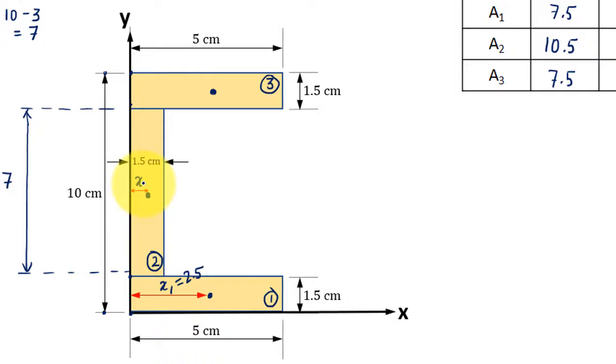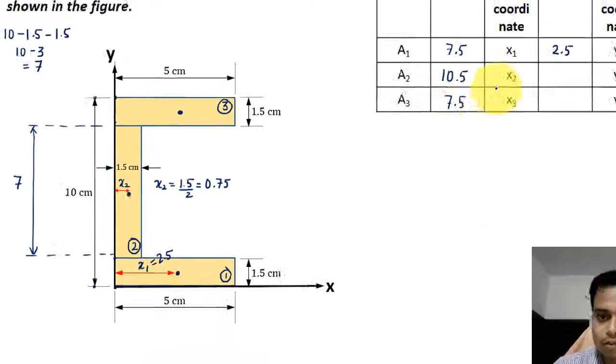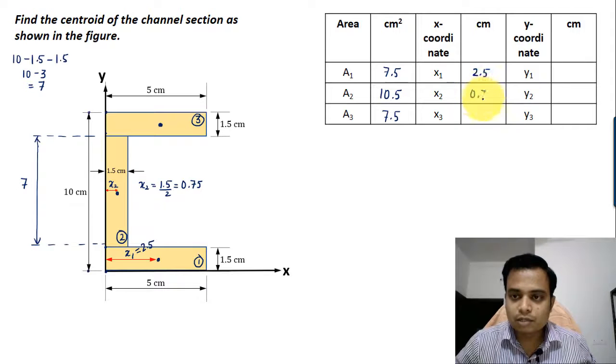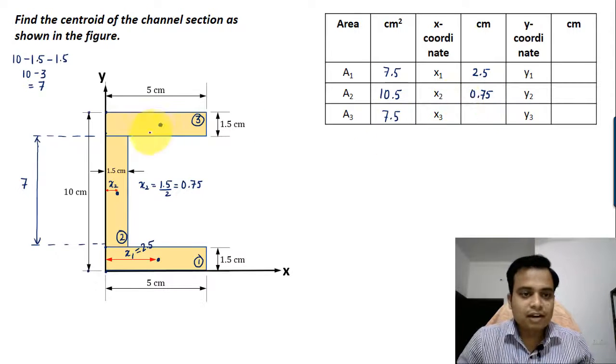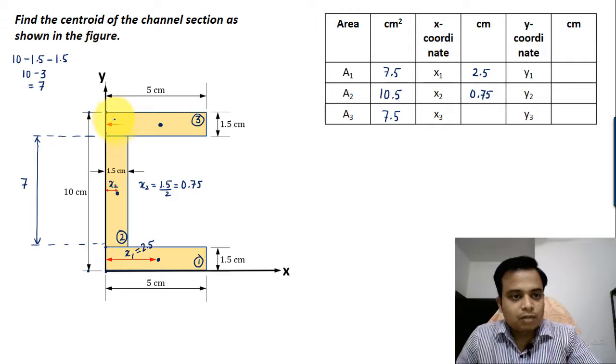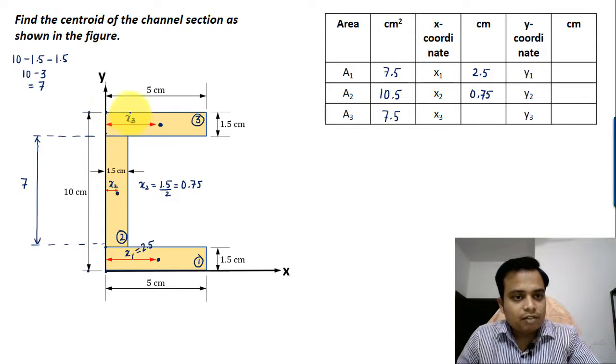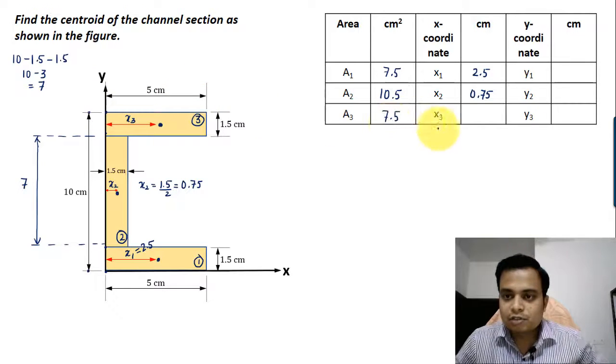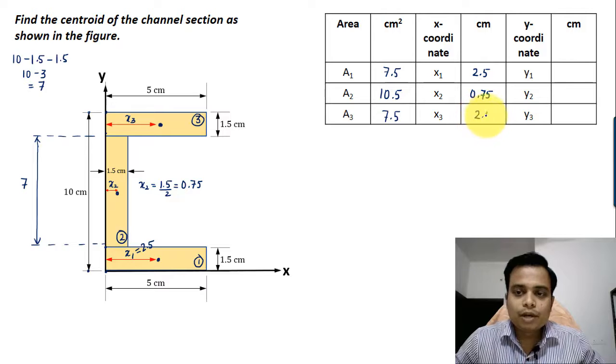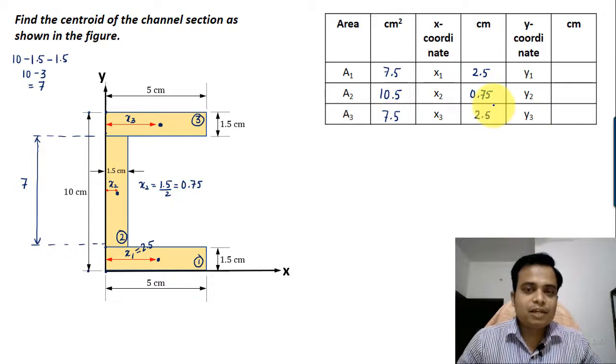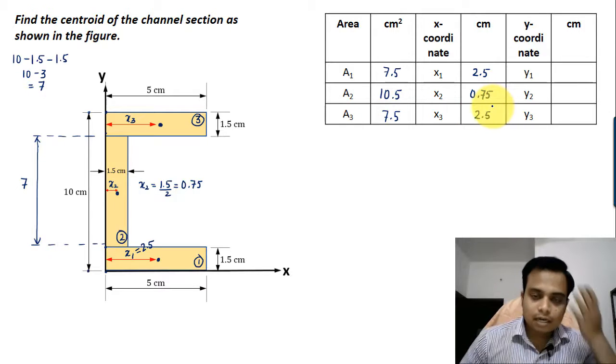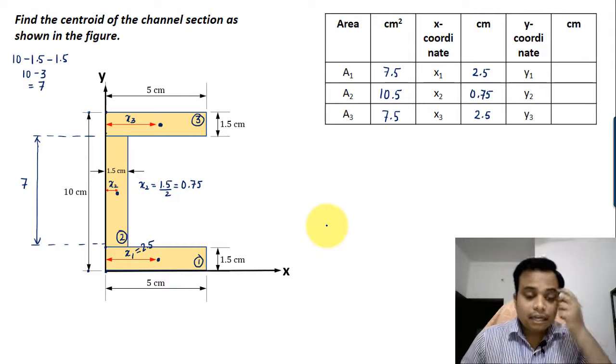That's x2, let me mark x2 somewhere here. If you watch carefully, the value of x2 will be equal to half of 1.5, which is 0.75. And then finally we have x3, which is also half of 5, so it's going to be 2.5. All of them have been computed in centimeters.